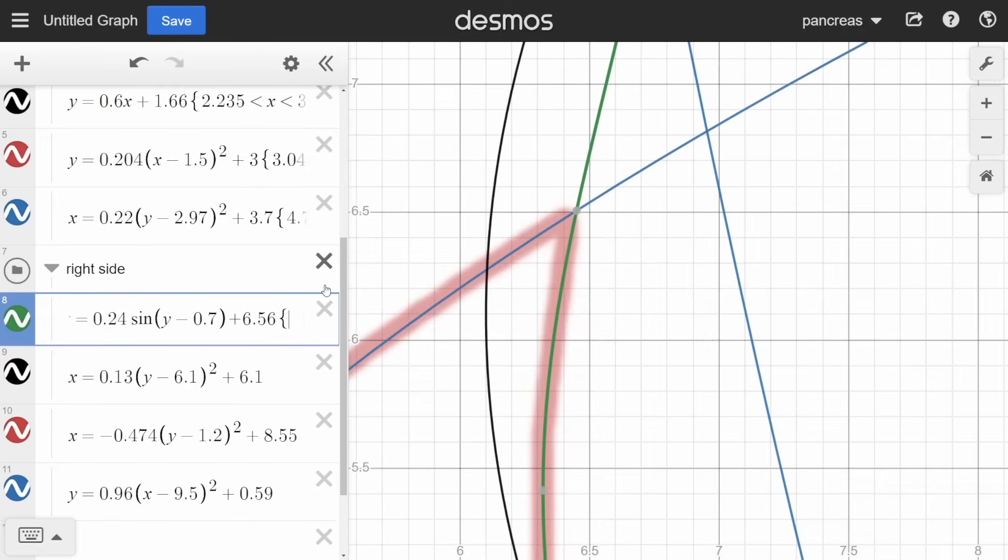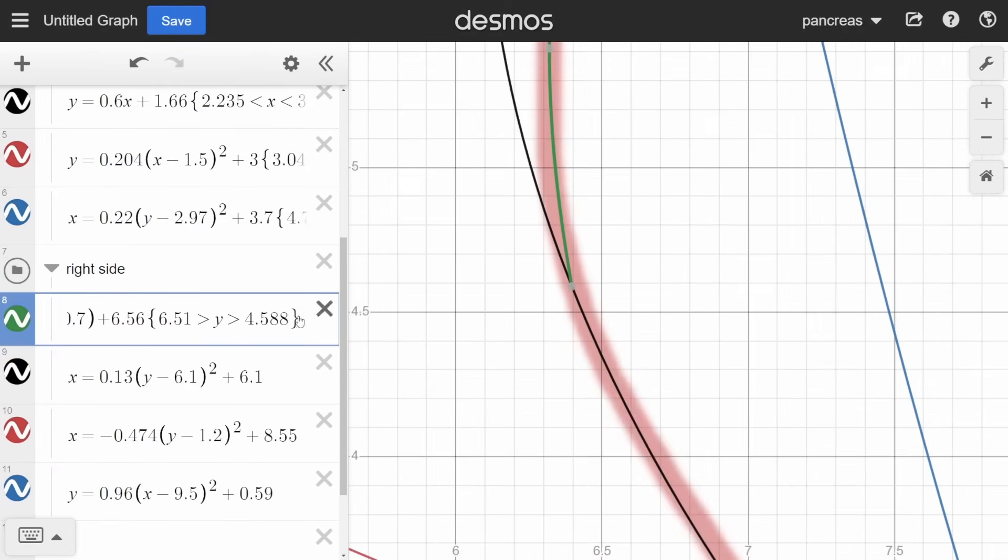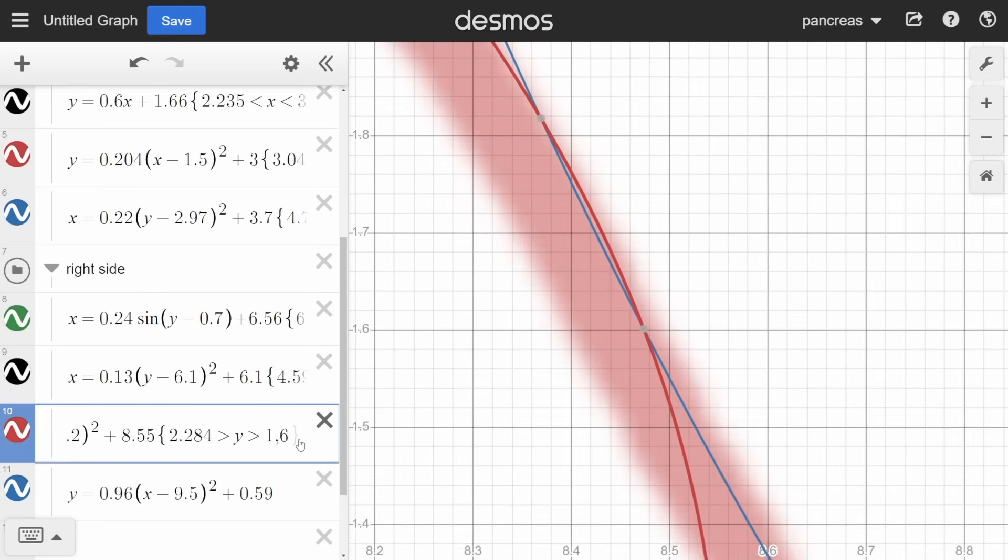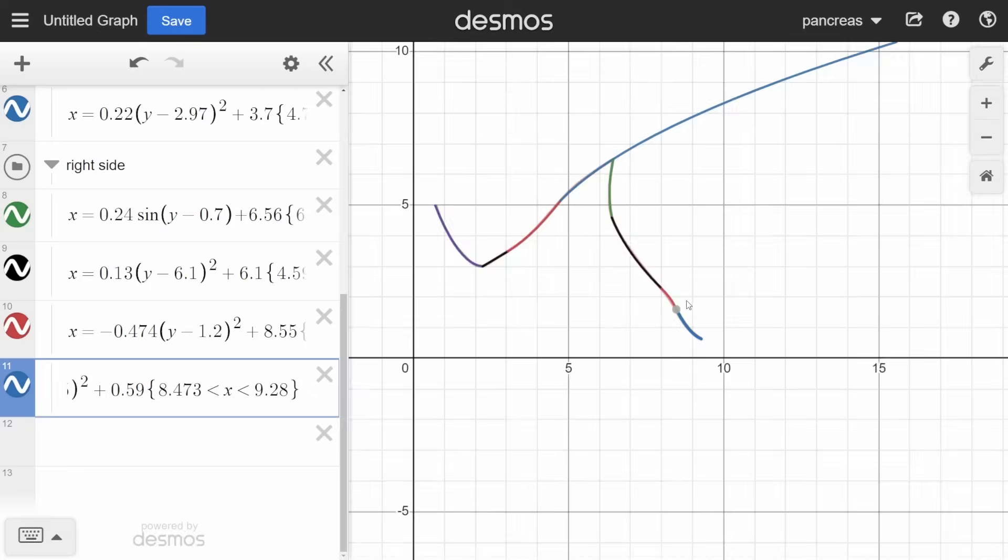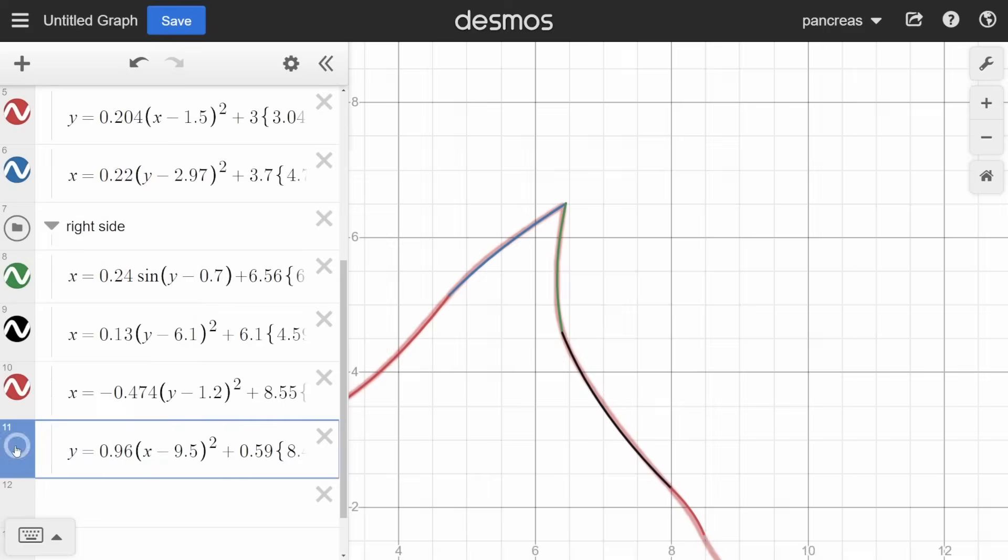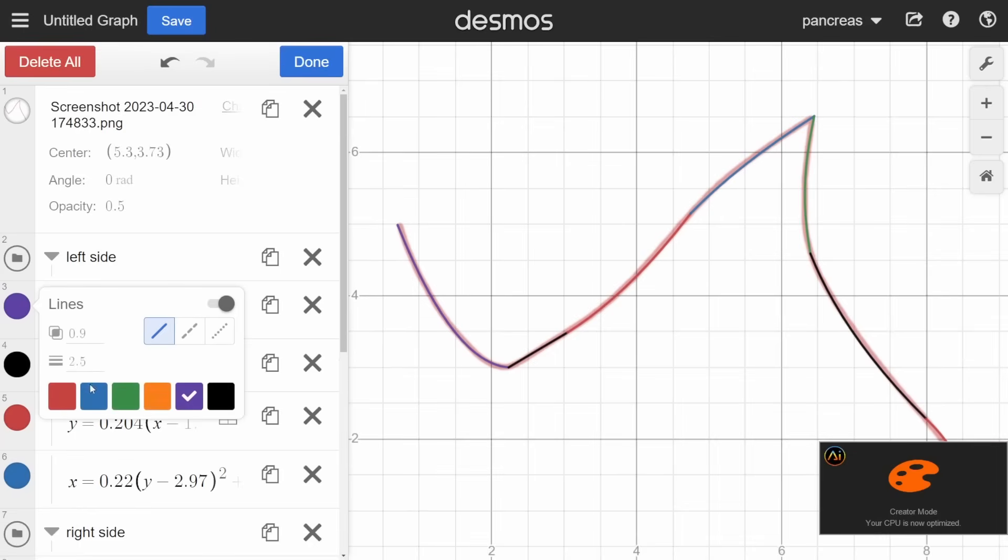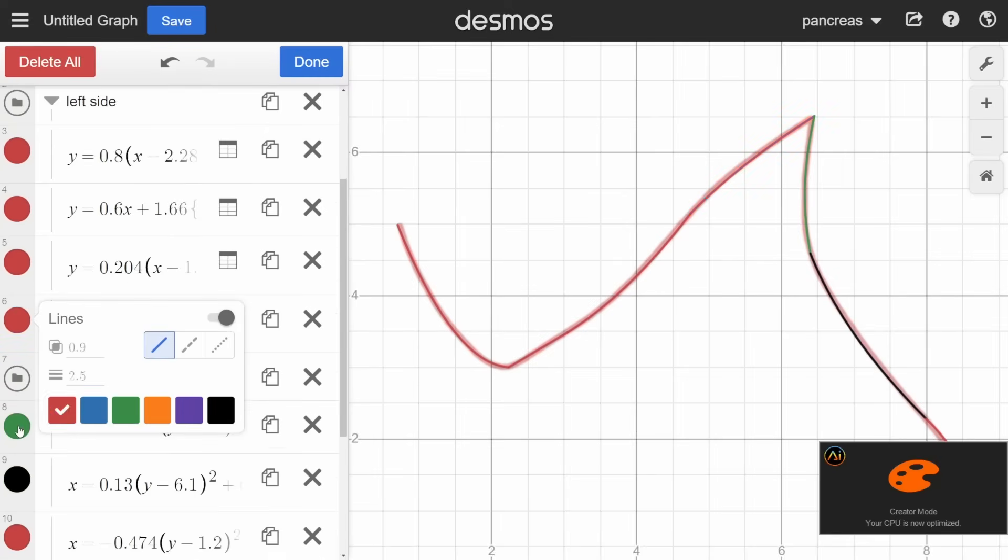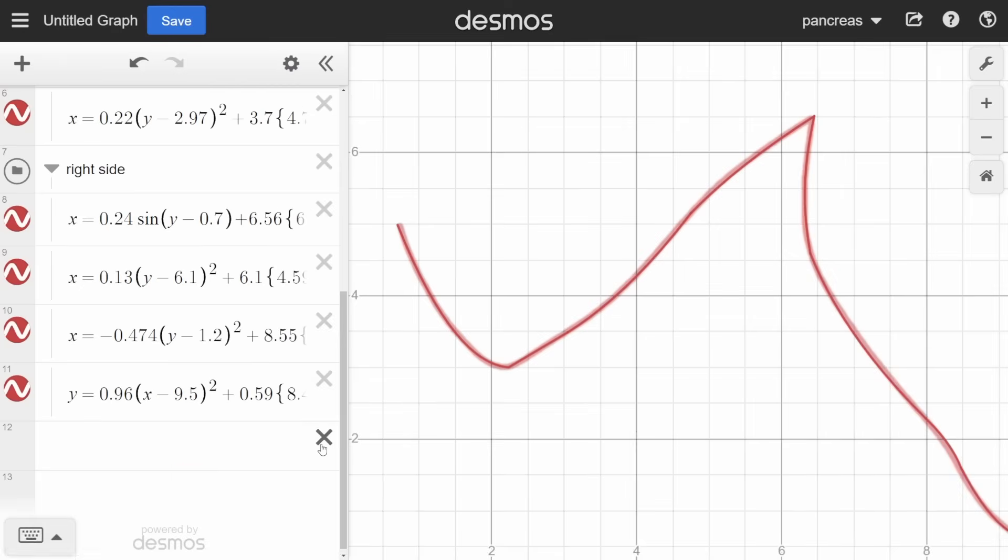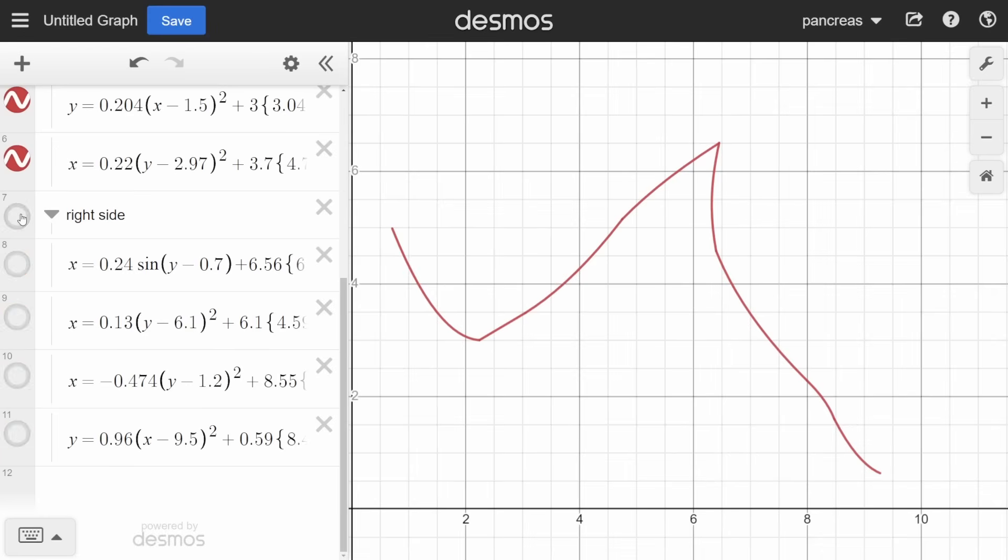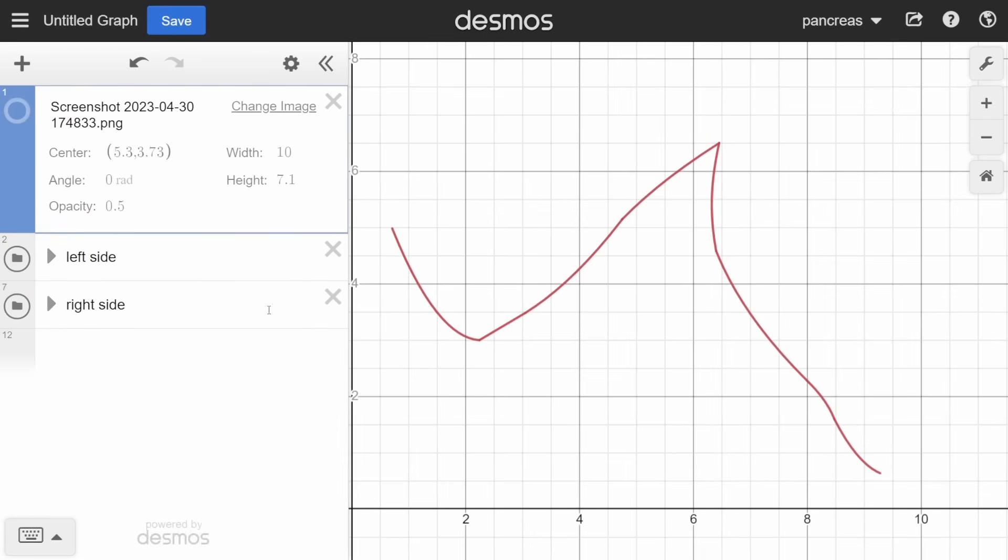Then I set all domains and ranges to ensure all lines stop where I want them to. Now we have all of our functions, but the lines are all different colors. To fix this we can go to the top right of our functions tab and then we can change the color of the functions to all be red. We can also turn on and off the red line, the functions, or the two parts of the line by pressing the circle beside them. Now you are ready to graph your function.